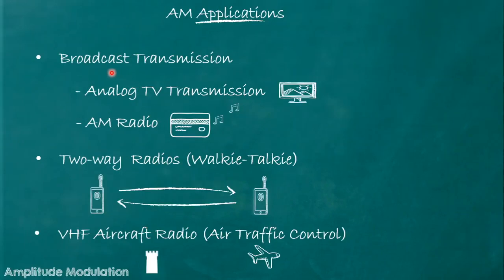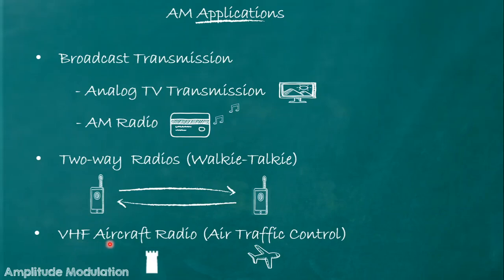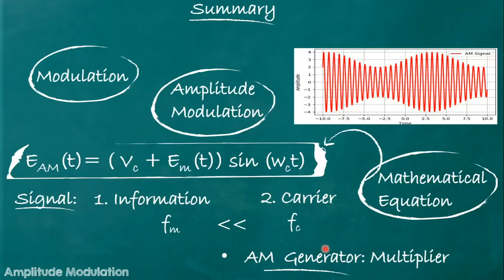Amplitude modulation is used in broadcast transmission, for example analog TV transmission and AM radio. It is also used in two-way radios, the best example being walkie-talkies. AM modulation is also used in VHF (Very High Frequency) aircraft radio, which is used in air traffic control.